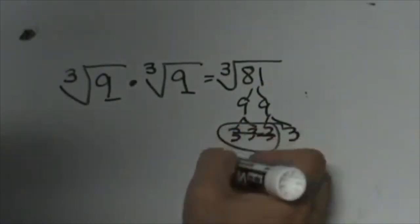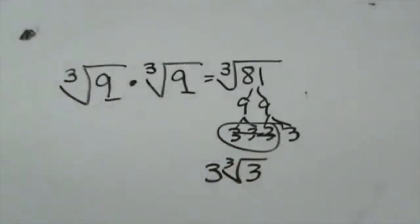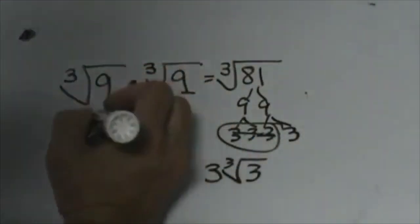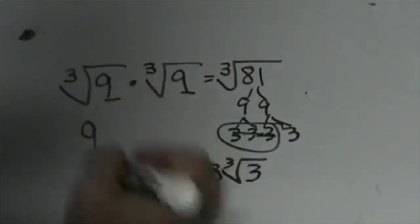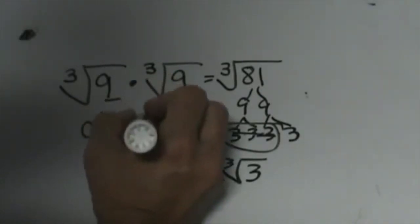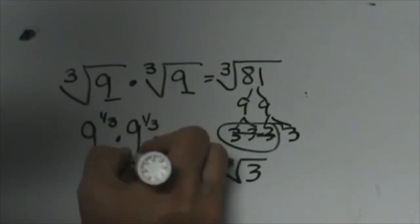So that ends up being 3 cube root of 3. So why can't we do that thinking about radicals? Because this is 9 to the 1/3 times 9 to the 1/3. Well that becomes 9 to the 2/3.